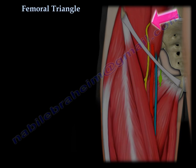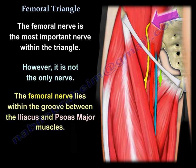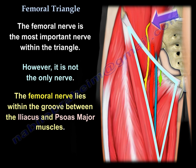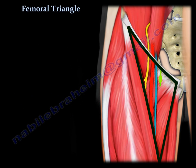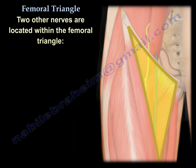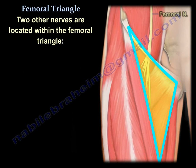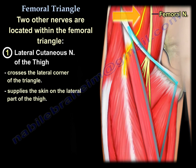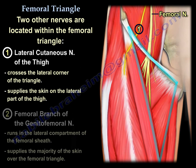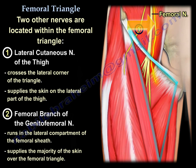The femoral nerve is the most important nerve within the femoral triangle; however, it is not the only nerve located there. The femoral nerve lies within the groove between the iliacus and the psoas major muscles. The two other nerves located in the femoral triangle are the lateral cutaneous nerve of the thigh and the femoral branch of the genitofemoral nerve.